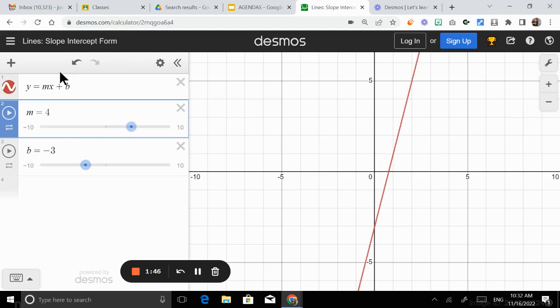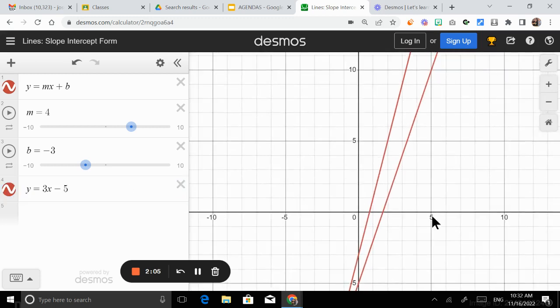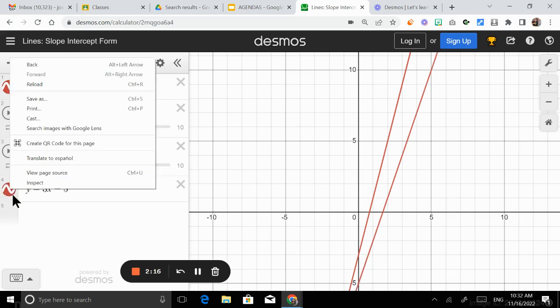Now you can compare with other functions. So for example, you can just type a different function right here. Y equals 3x minus 5. Now you can compare two different functions and then you can see which one is increasing faster and which one is increasing slower and so on. If you guys want to change the ones that are visible or not, you can just click here. It's pretty cool.